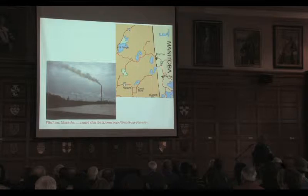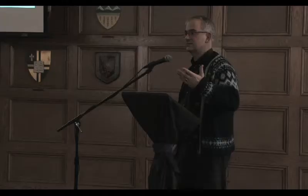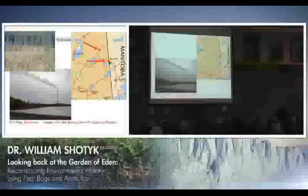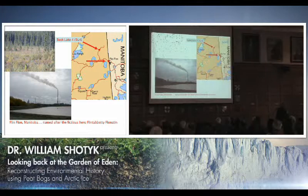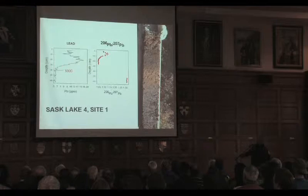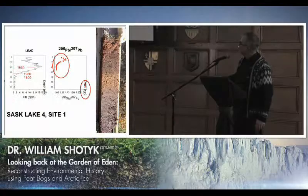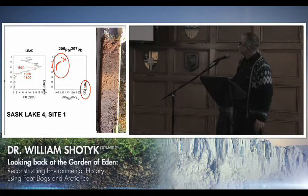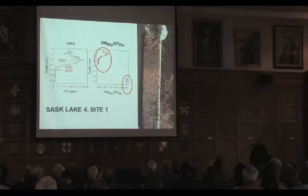One application of this work: if we wanted to look at the impact of a particular contamination source, here we have a zinc smelter in Flin Flon, Manitoba. About 90 kilometers away we have a peat bog at Sask Lake, and we can collect a peat core to document changes in atmospheric metal emissions from this smelter. We see very low lead concentrations before 1930, when the smelter opened. We have an increase in lead concentrations reaching a maximum in the 1960s, with a completely different isotopic composition. Bogs are outstanding archives of atmospheric lead.